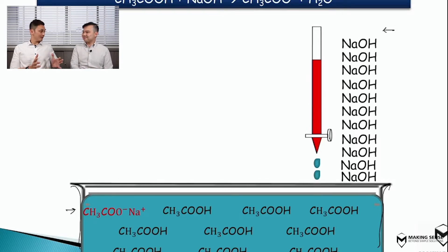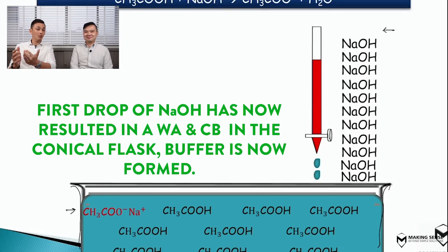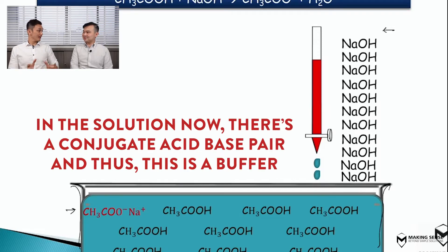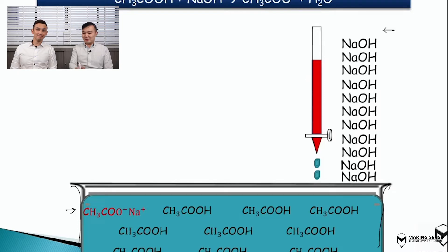Before we started, it was just all ethanoic acid — only a weak acid present. But now the first mole of NaOH has entered the solution, and we know there's an acid-base reaction that has converted it into a salt. So if I focus on the conical flask, I see a combination of the weak acid as well as the salt. They are a conjugate acid-base pair — therefore we have a buffer! So immediately the first drop of NaOH you add in is going to create a buffer.